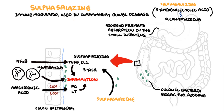5-amino salicylic acid, or 5-ASA, acts locally as an anti-inflammatory molecule by inhibiting the enzymes cyclooxygenase and lipoxygenase locally, as well as nuclear factor Kappa B. Thus, sulfasalazine reduces inflammation.